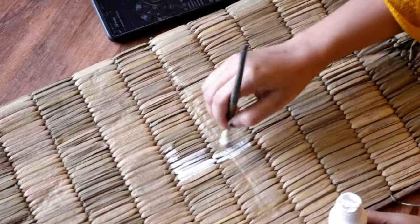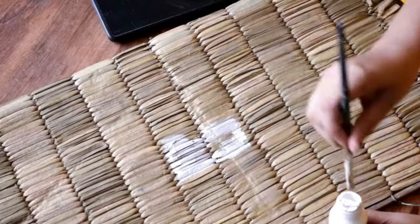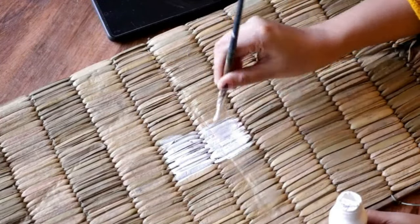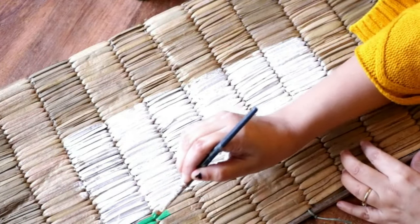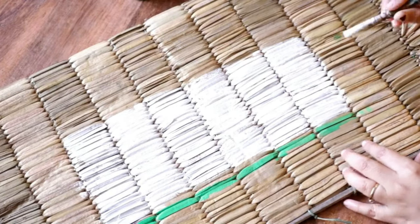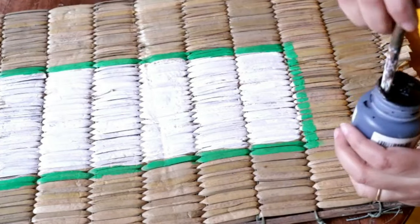I am going to cover the middle section with the white paint. Once done painting the middle section, then I will make a green border around the white section. Then I will cover the rest of the portion with black acrylic paint.